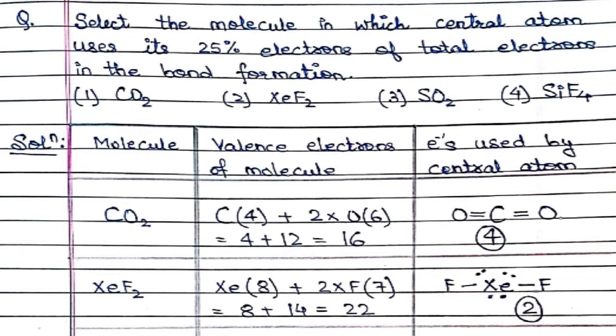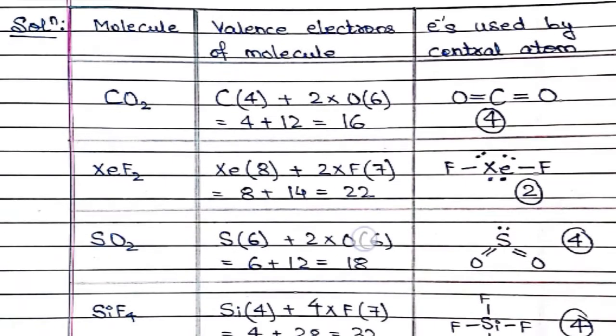carbon dioxide CO2, xenon difluoride XeF2, sulfur dioxide SO2, and silicon tetrafluoride SiF4. I prepared a table to ease out the difficulty of this question. The table is divided into three parts: molecule, the total valence electrons of the molecule, and electrons used by the central atom.